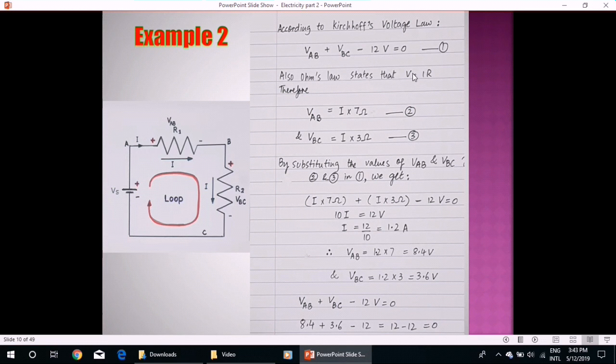Now, according to Ohm's law, we know V is equal to IR. We substitute the value of VAB and VBC according to Ohm's law where I into 7 ohm for R1 and 3 ohm for R2. I is same because current in series remains the same. Now, by substituting the values of VAB and VBC from 2 and 3 in equation number 1, we get this expression and by simplifying we get current 1.2 ampere.